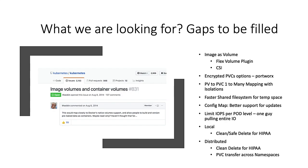We're looking for options to limit network access at the pod level for a given Spark application, so one pod doesn't consume all network resources. Currently we can control pods for memory and CPU, but we want to be able to control pods for network bandwidth as well. We're also looking for volume options that handle safe delete for ISO, HIPAA, and other certification requirements — either a volume plugin or native Kubernetes support for safe delete.